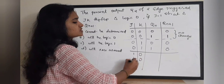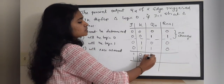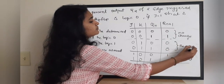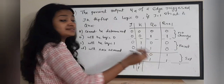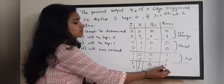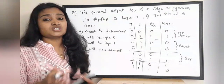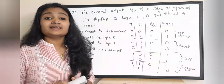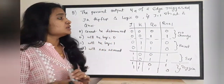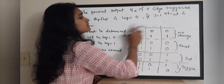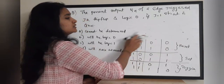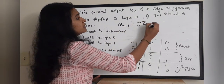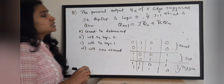Looking at the JK flip-flop truth table: when J and K are 1 and 0, the output is 1 — that is the set state. When J and K are 0 and 1, it is the reset state. When J and K are 1 and 1, it is the toggle state. This truth table is used to find the characteristic equation of the JK flip-flop. The characteristic equation is QN+1 equals J·QN-bar plus K-bar·QN.